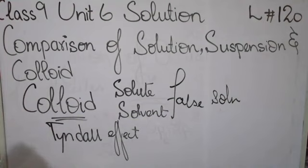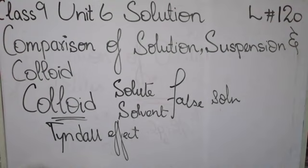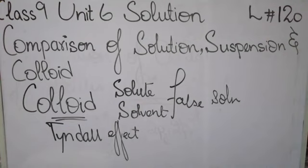For example, if you mix starch powder in water, that is an example of a colloidal solution. The albumin — the white part of an egg — is also an example of a colloidal solution. Soap solution: when you mix soap in water, it is also a colloidal solution, because soap particles are big enough to scatter light. Milk is also a colloidal solution. Ink, jelly, and toothpaste are also colloidal solutions.